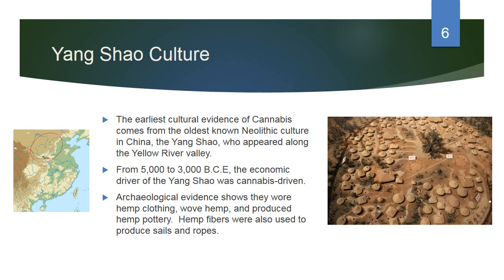The earliest cultural evidence of cannabis comes from the oldest known Neolithic culture in China, the Yang Shao, who appeared along the Yellow River Valley. All of these major civilizations emerged around large bodies of water because they needed that water to manage their agricultural output. From 5,000 to 3,000 BCE, the economic driver of the Yang Shao was cannabis. Archaeological evidence shows they wore hemp clothing, wove hemp, and produced hemp pottery. Hemp fibers were also used to produce sails and ropes — a plant that defined this entire early culture.